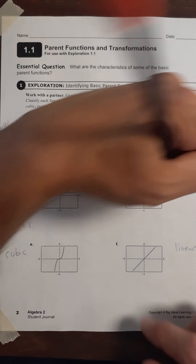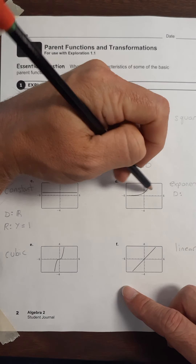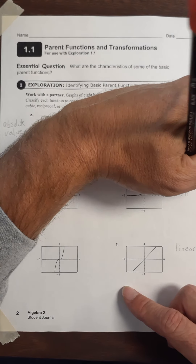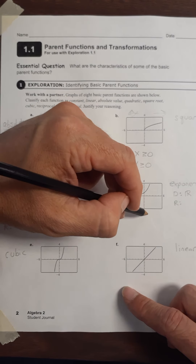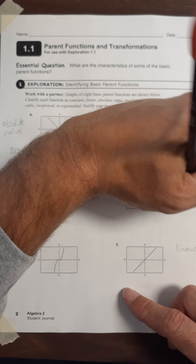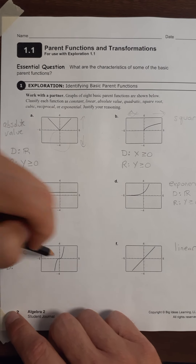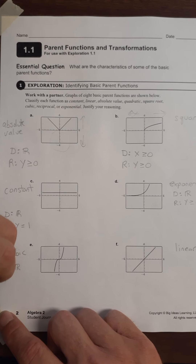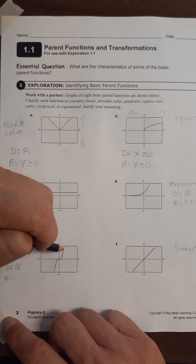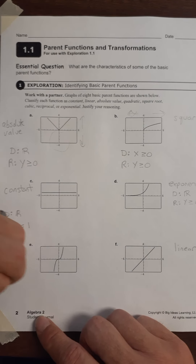For the exponential function: does it go to the left forever? Yes. Does it go to the right forever? Yes. So all real numbers for the domain. For the range, it goes up forever but it does not go down forever, so it's all the y's that are greater than or equal to zero. For the cubic, domain — it goes to the right and keeps going to the left — all real numbers. And for the range, it does go up forever and it does go down forever, so this is our first range that is also all real numbers.